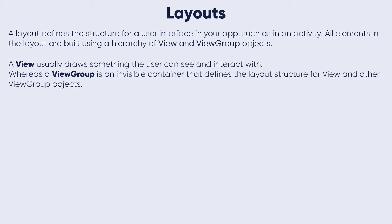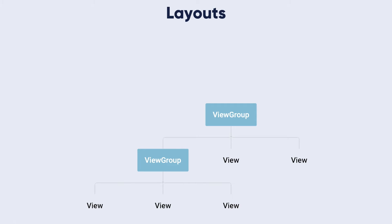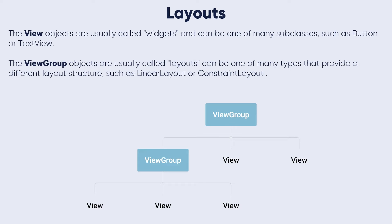A view draws something the user can see and interact with, whereas a view group is an invisible container that defines the layout structure for views and other view group objects. A view is usually called a widget and can be one of many subclasses such as the Button or the TextView that we have already worked with.